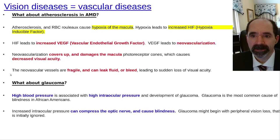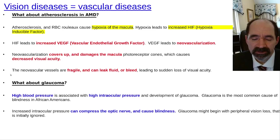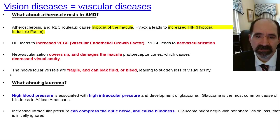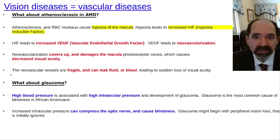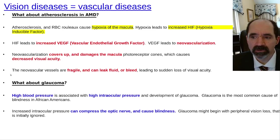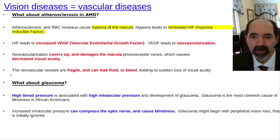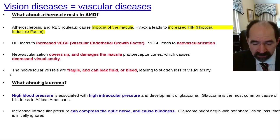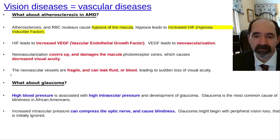Under the hypoxic conditions of a high-fat and high-sodium diet, hypoxia leads to release of hypoxia-inducible factor, HIF. HIF then leads to VEGF — vascular endothelial growth factor — which causes neovascularization: the ingrowth of fragile new small blood vessels that often leak as they form their branching capillary system. When these vessels leak, the fluid can obscure vision; they can also bleed, further obscuring vision.